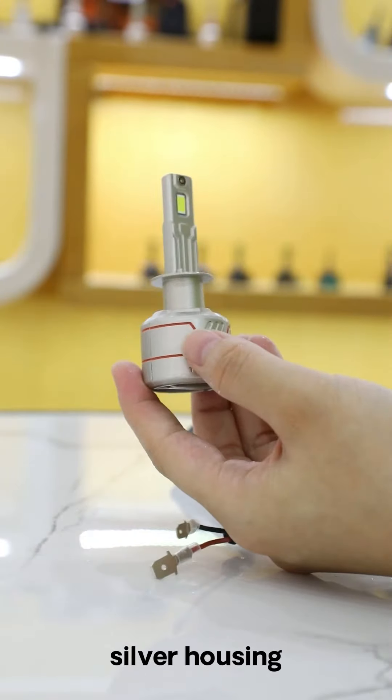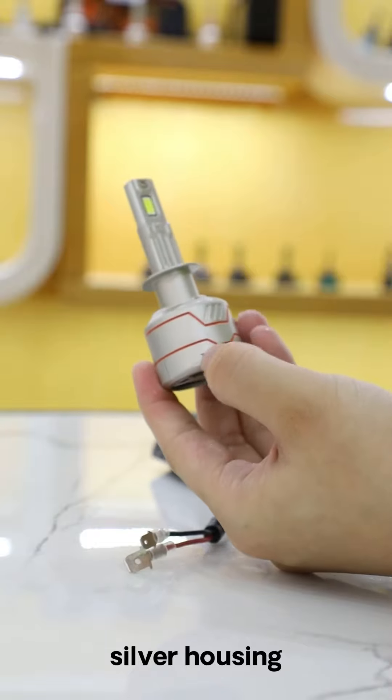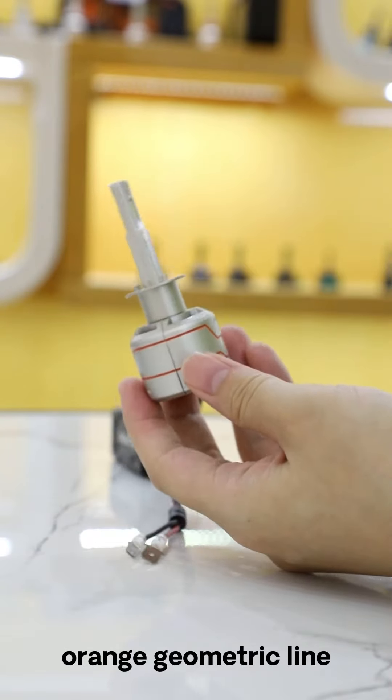The X8 headlight has the most distinctive look of the three headlights in the X-Series, with two orange geometric lines on its silver housing.